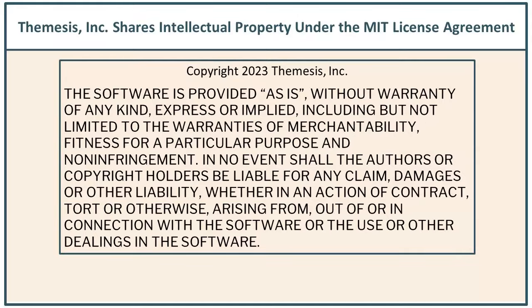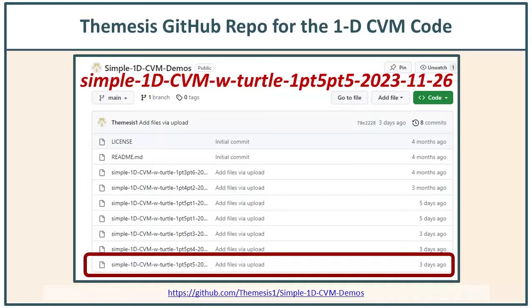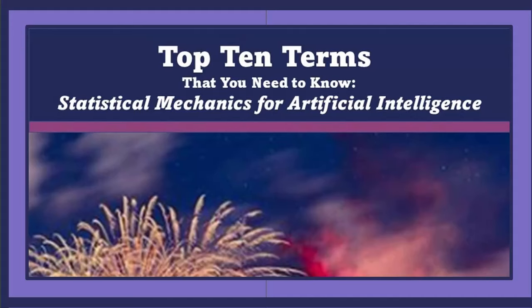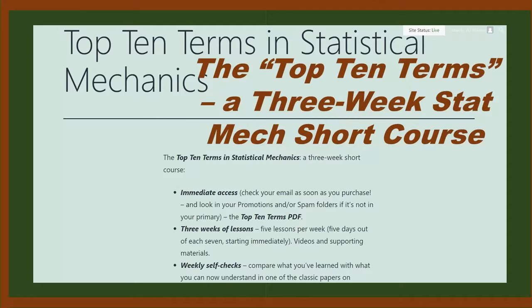Now, in case we haven't met before, I'm Aliana Morhen, founder and chief scientist with Themisys Incorporated. We're a boutique AI company doing research in AGI, sharing a great deal of what we're discovering and creating with you under the MIT license agreement. The work we're sharing today uses code we've already developed and placed in an open GitHub repository. We're also doing a great deal in AI education — please be on the lookout for an upcoming Themisys short course on the top ten terms in statistical mechanics, designed to empower you to read those classic works in energy-based neural networks.